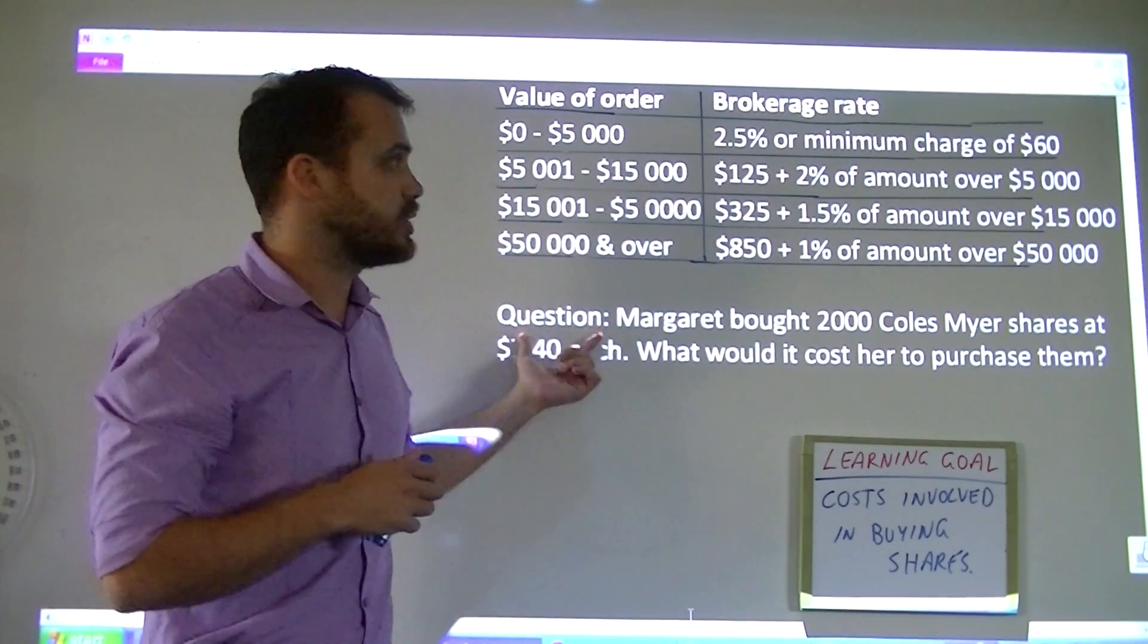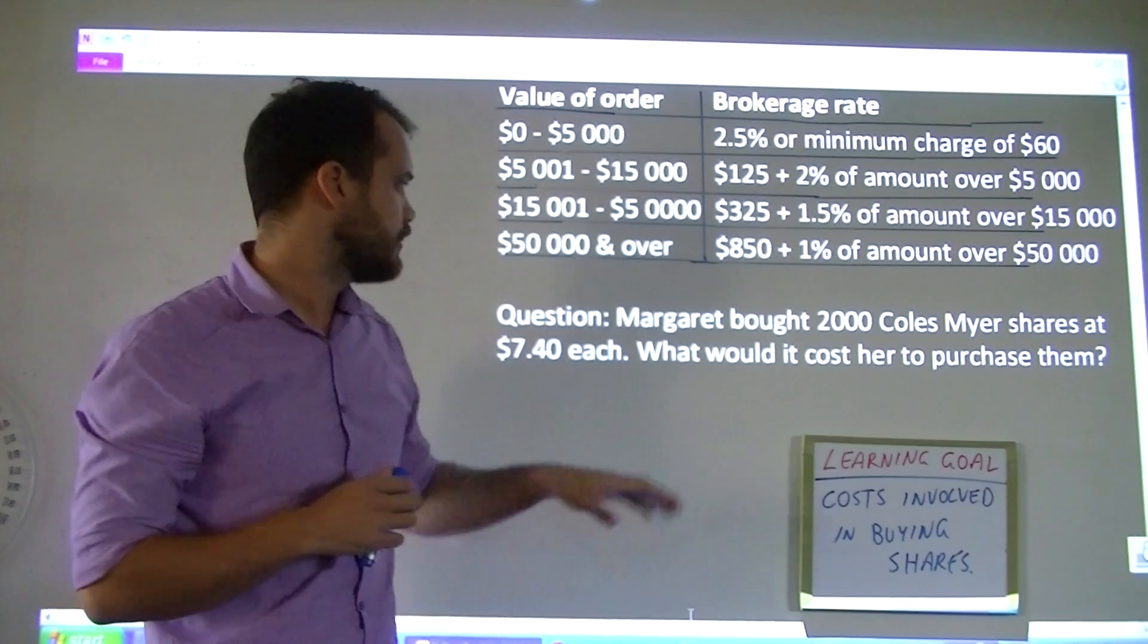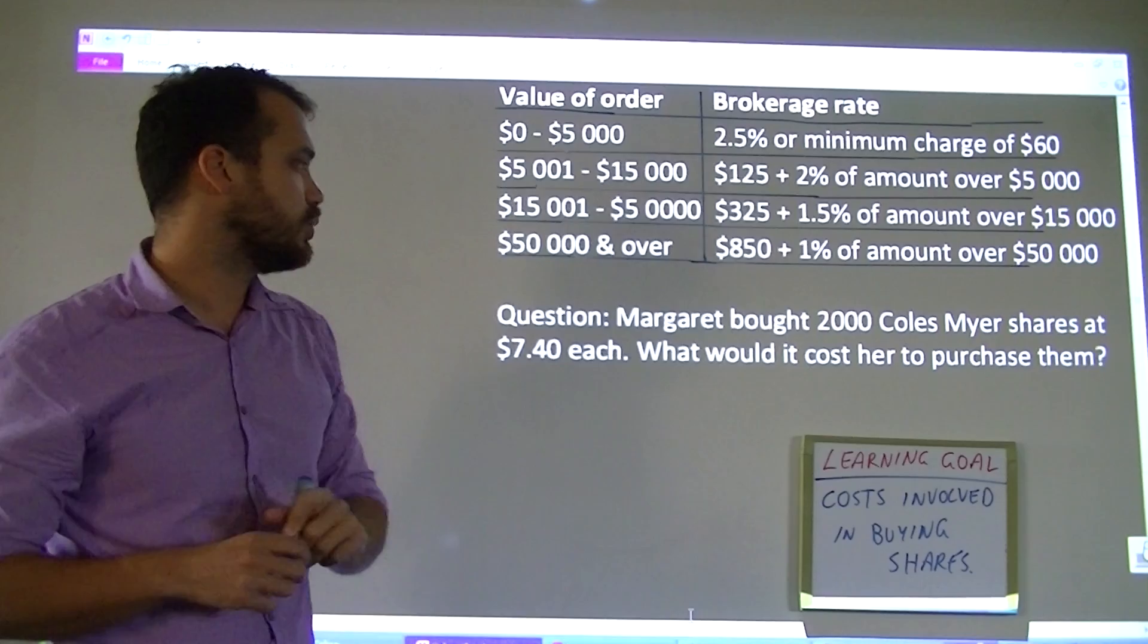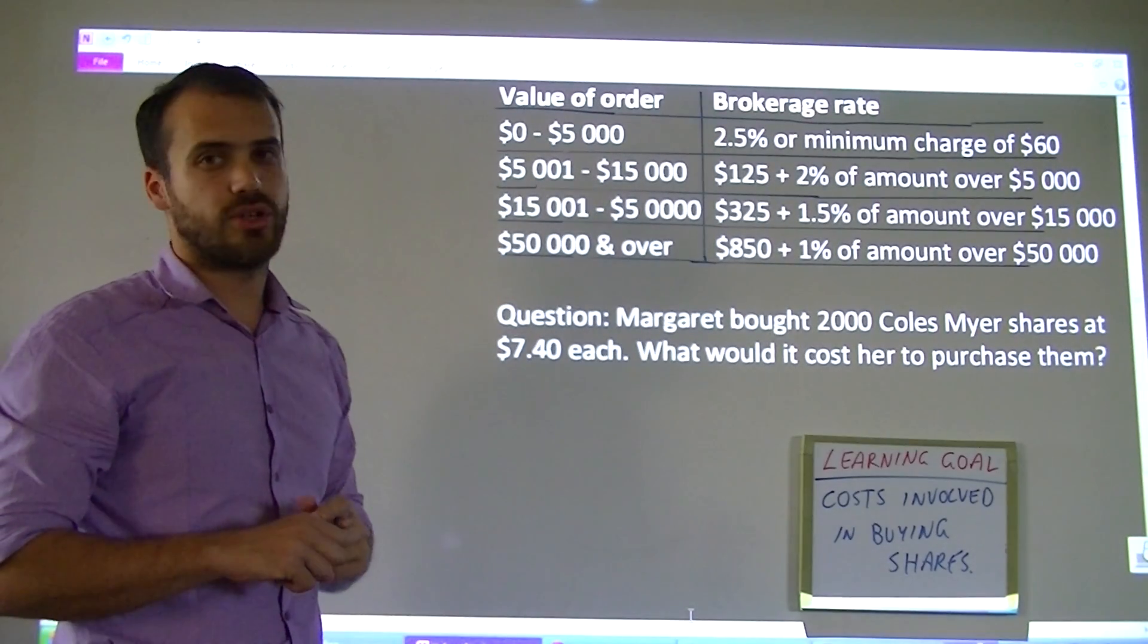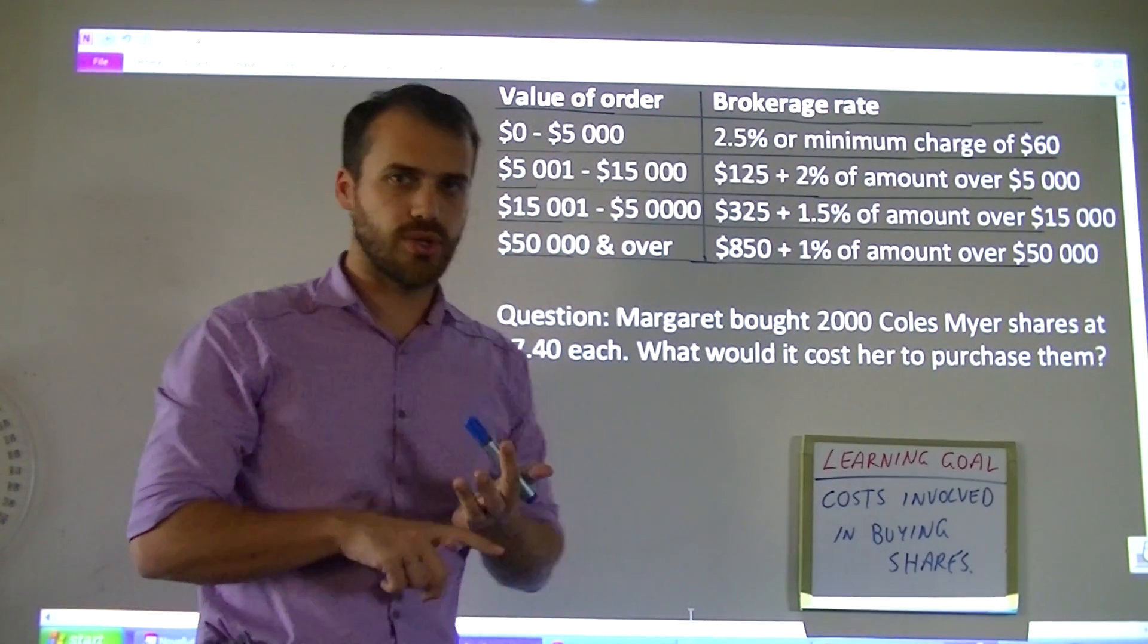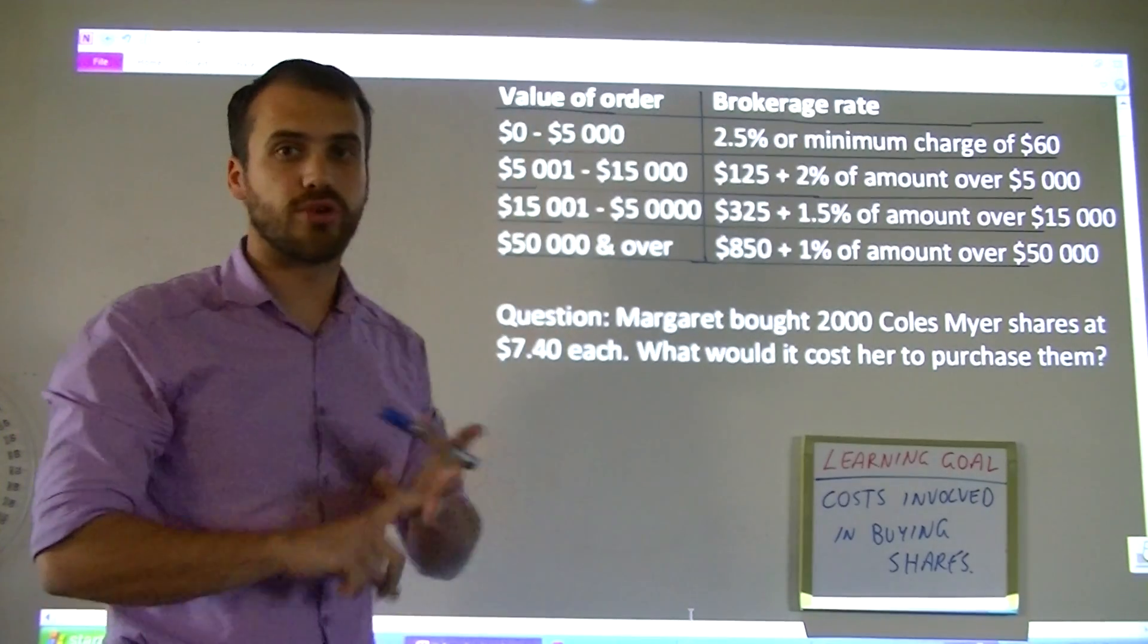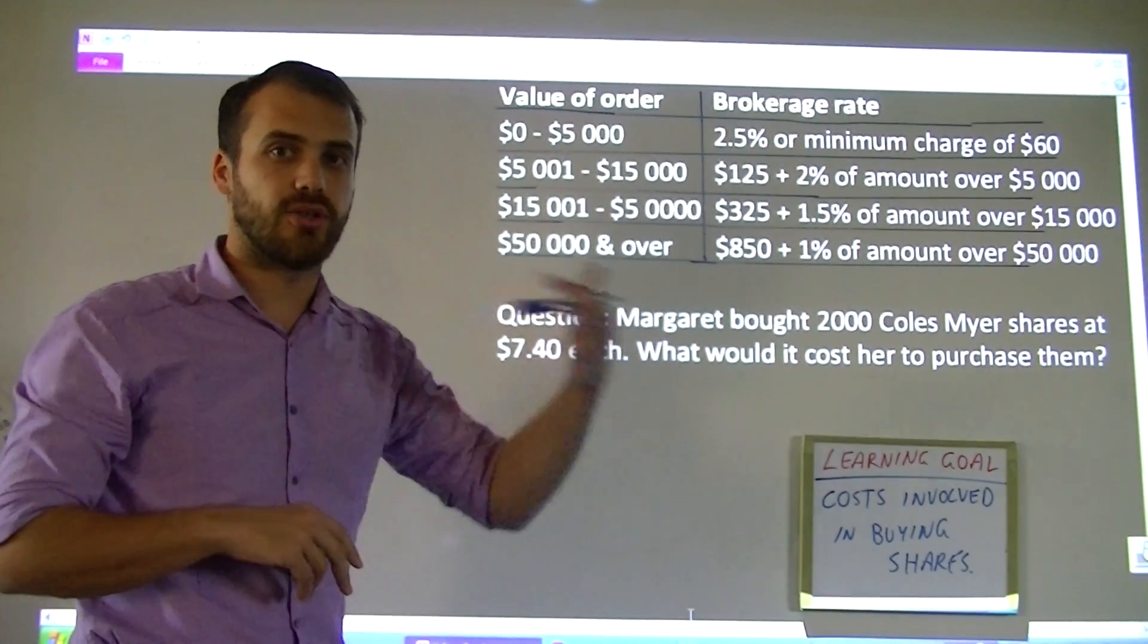Let's take a look at a question. Margaret bought 2000 Coles Myer shares at $7.40 each. What would it cost her to purchase them? There's going to be two costs involved: the cost of the shares themselves and also the brokerage fee that she needs to pay on top of that.